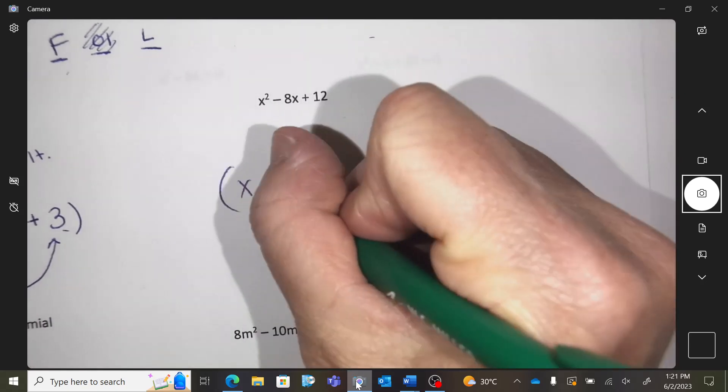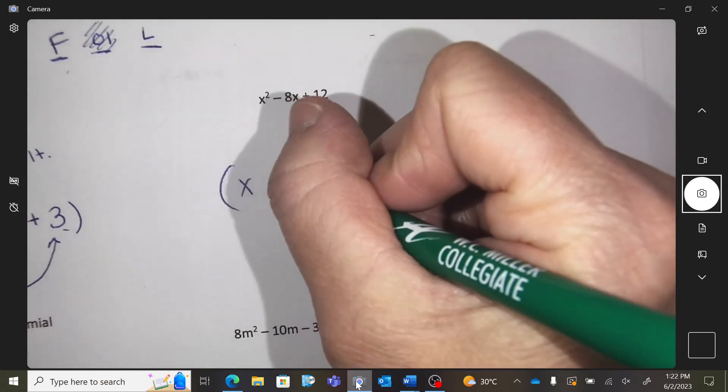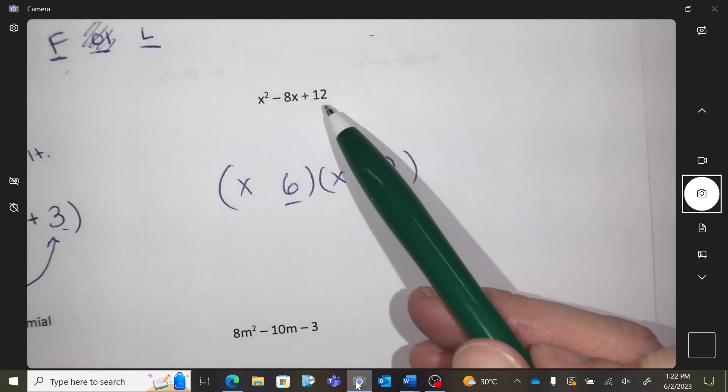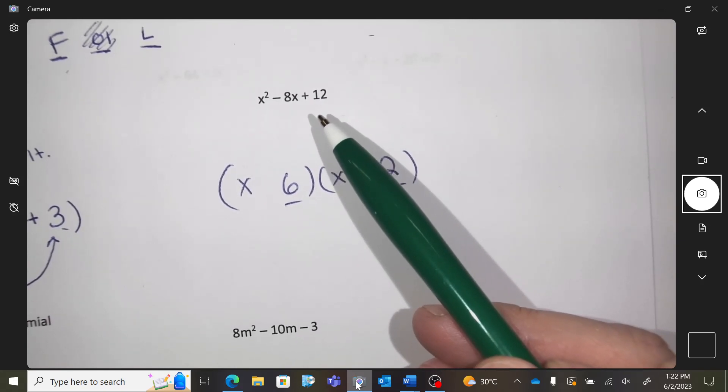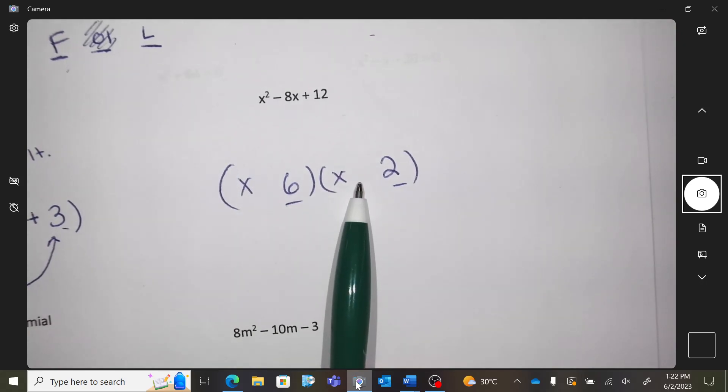So what times what can make 12? So 6 times 2 might be on your mind. And because I'm going to get an 8 out of it. Now, what do we know about the signs? To multiply to positive, they have to be the same signs. So you either have both positives or both negatives. But how do you then make a negative 8?